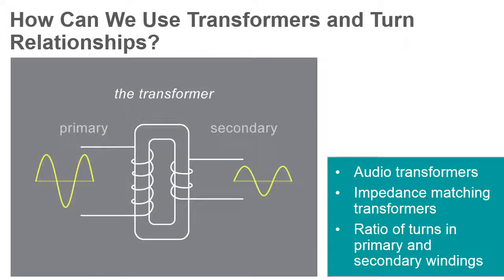In all of these cases, it's critical to know the difference between the input and output signals, and that difference is largely managed through the ratio of turns between the primary winding and the secondary winding.